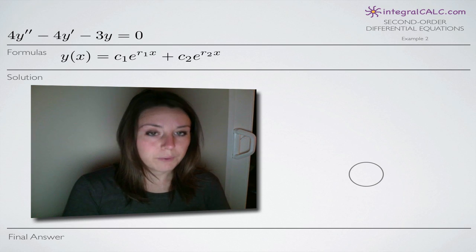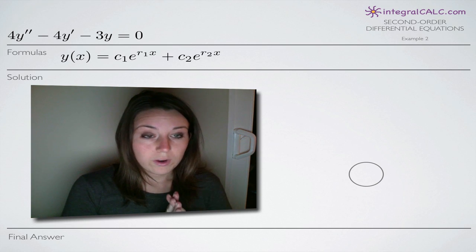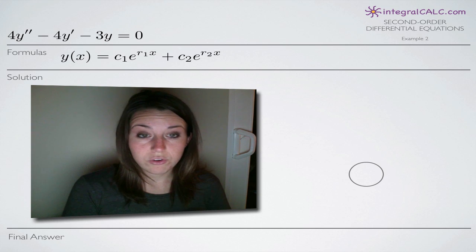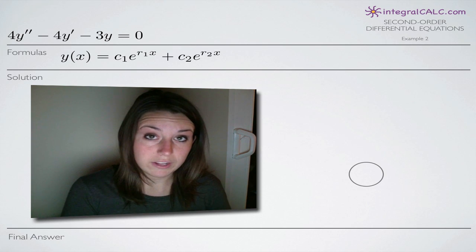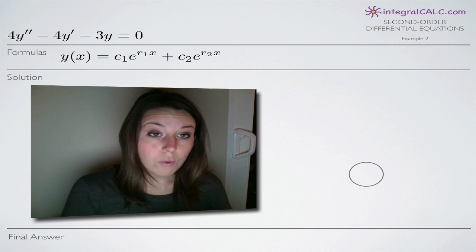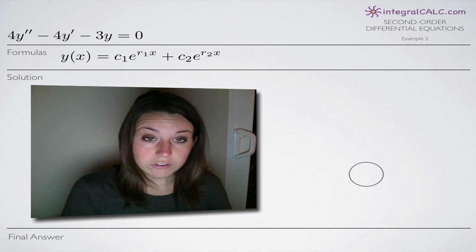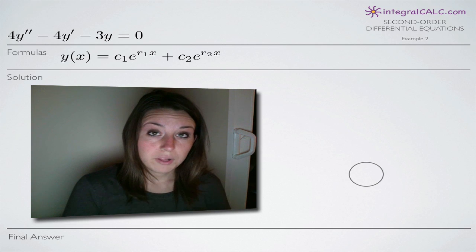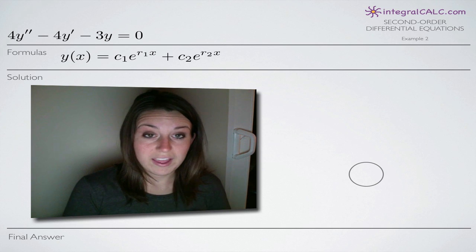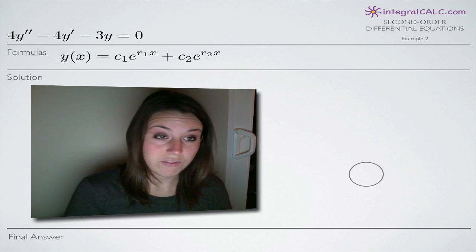This is a basic problem. We're going to leave c sub 1 and c sub 2 alone so they'll appear in our final answer. All we're looking to solve for is r sub 1 and r sub 2. We will find values for r sub 1 and r sub 2, plug them into the formula, and leave everything else as is — that will be our final answer.